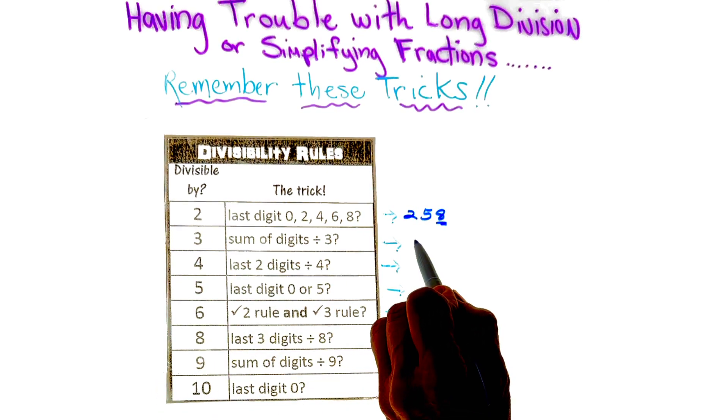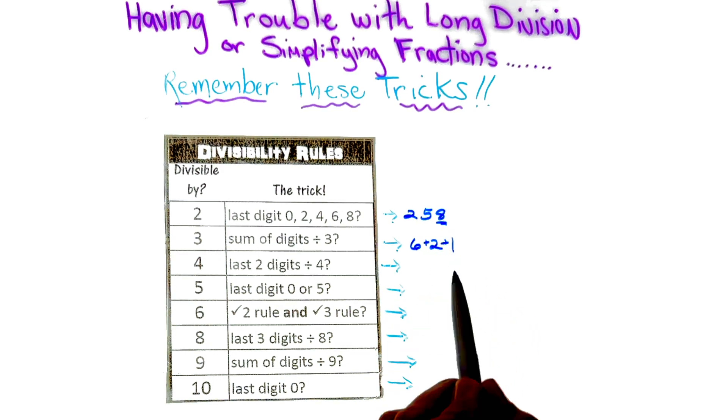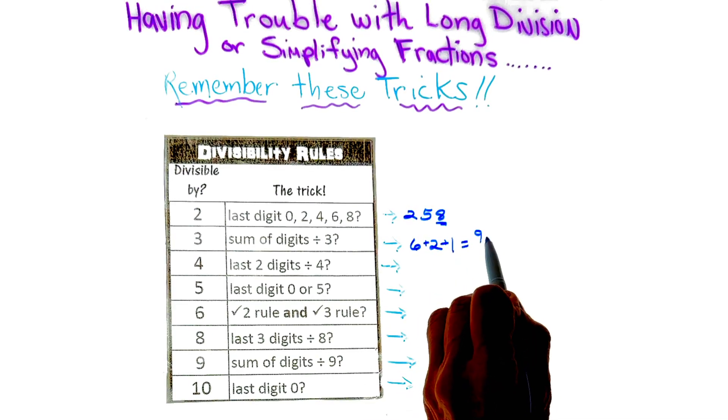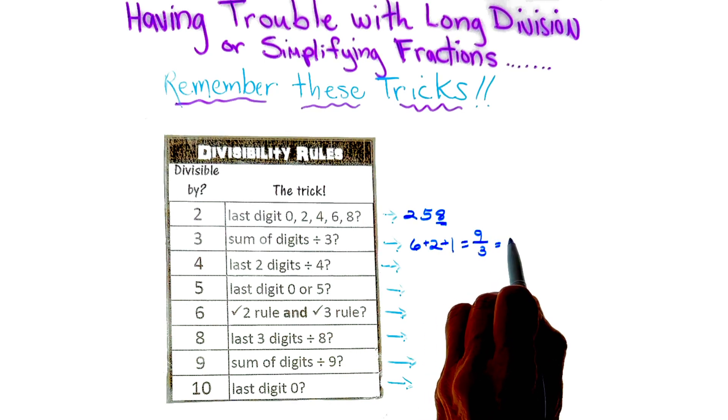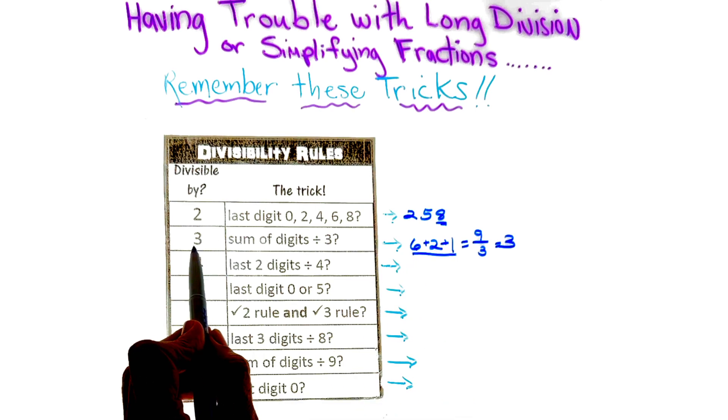So here is an example, 621. If we add those digits, we end up getting 9 divided by 3, and we see that that does work. So 621 is divisible by 3.